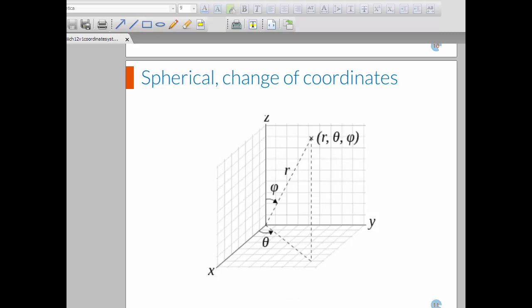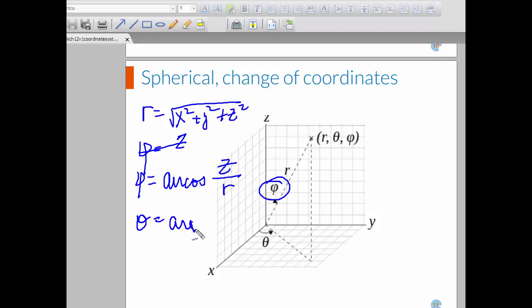When we look the other direction and we try to write the spherical coordinates from the Cartesian, r is the square root of x squared plus y squared plus z squared. The cosine of phi is z over r. So phi itself is the angle whose cosine is z over r. And then theta is the angle whose tangent is y over x.